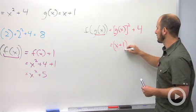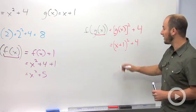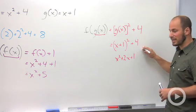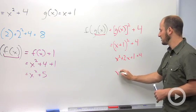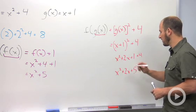Foiling this out: x squared plus 2x plus 1. Combining your like—this plus 4 on the end—combining our like terms: x squared plus 2x plus 5.